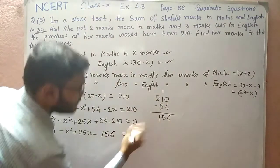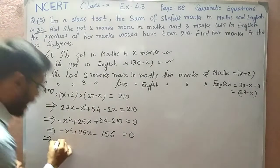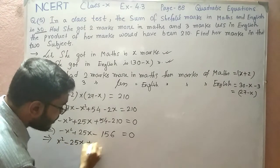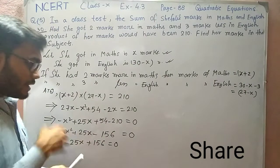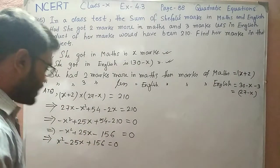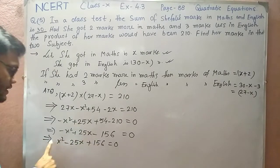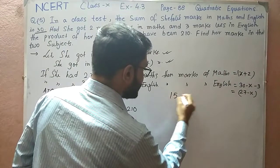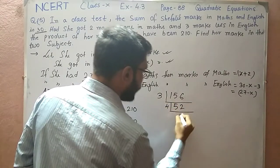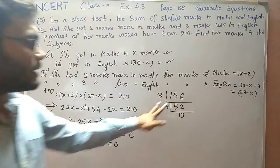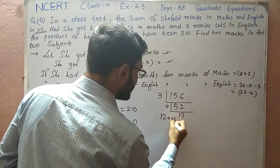Taking minus as common from the left-hand side, it becomes x squared minus 25x plus 156 equals 0. Now we need to factorize 156. Factorizing: 156 = 12 × 13. Checking: if we add 12 and 13 we get 25, which matches the coefficient of x. So we have found the factors.